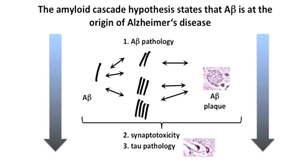The amyloid cascade hypothesis states that abnormal multimerization of the amyloidogenic peptide A-beta is the origin of Alzheimer's disease, and that soluble low-N A-beta oligomers precede the formation of the large insoluble extracellular plaques. Precisely defining the biological functions of each single A-beta oligomer in vivo has been difficult so far because there is a kinetic equilibrium between different multimeric states.